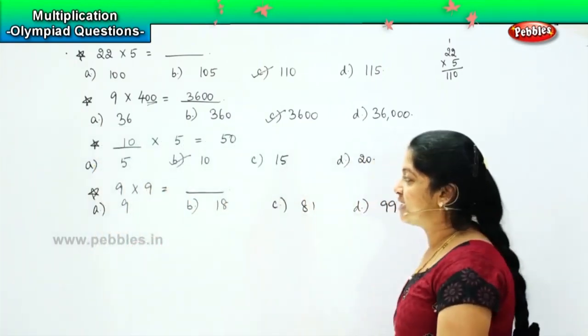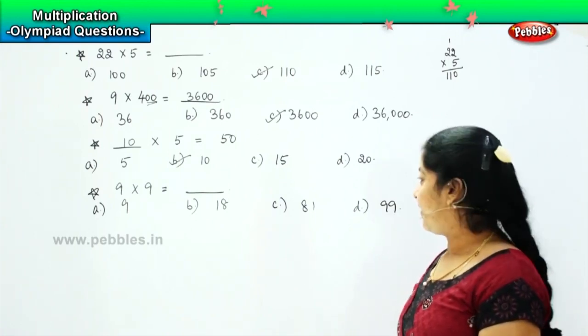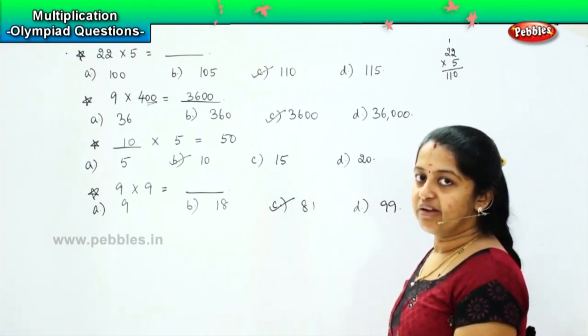So we know the table of 9, right. What is 9 into 9 children? 9 9s are, very good, it is C 81. Clear, shall we move ahead?